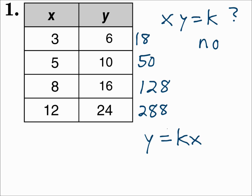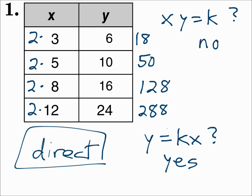Let's see if direct variation works instead. Direct variation is y equals k times x — if x times k equals y each time and k is the same, it'll work. What times 3 equals 6? That's 2. What times 5 equals 10? 2. What times 8 equals 16? 2. And what times 12 equals 24? 2. The 2s were the same each time, so y equals kx works — this is direct variation.